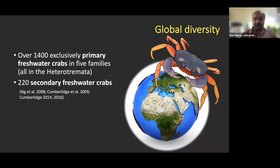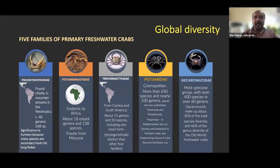There are five families of primary freshwater crabs. Primary freshwater crabs spend their entire life in freshwater systems — their entire life cycle is restricted within freshwater aquatic systems — and that is what makes them different.